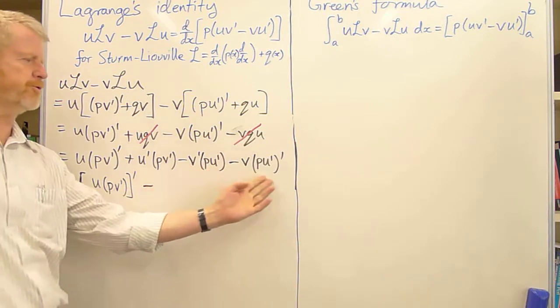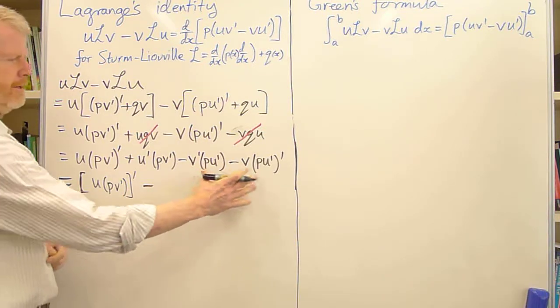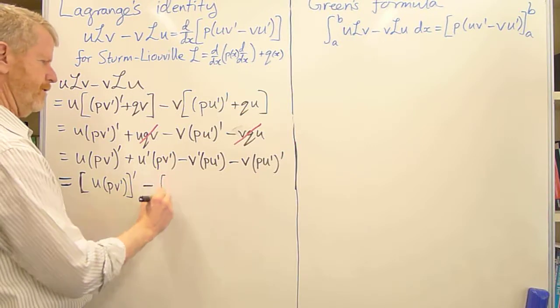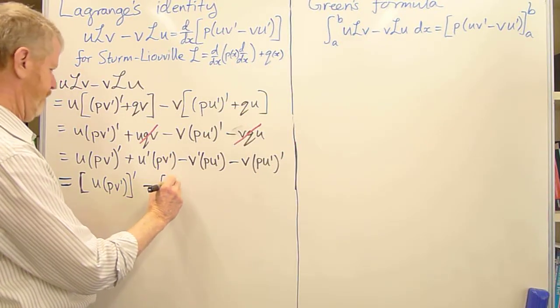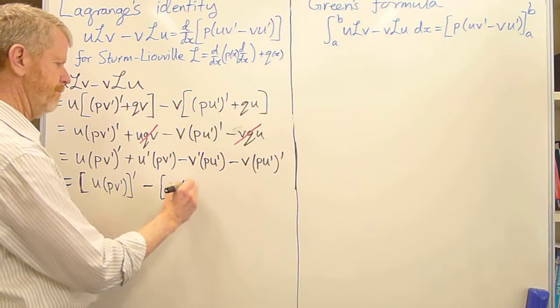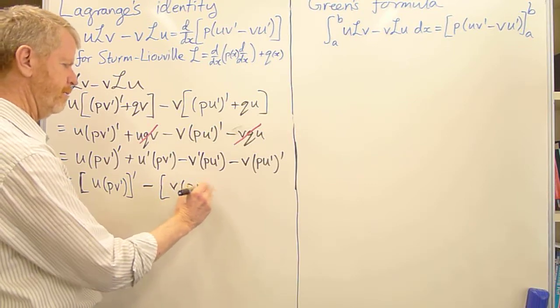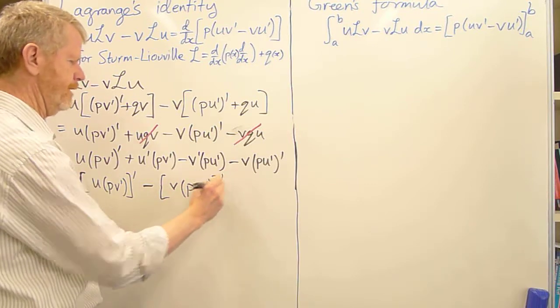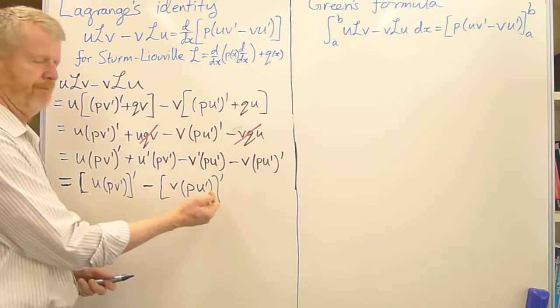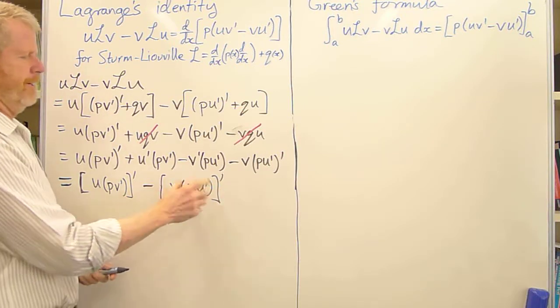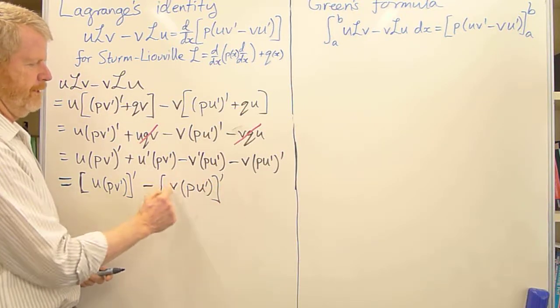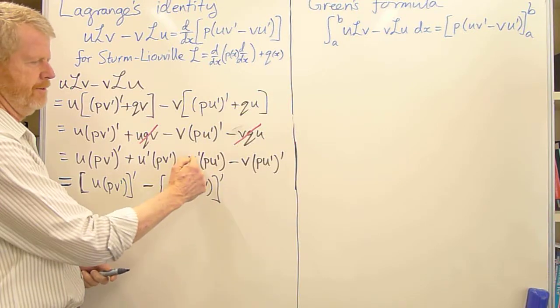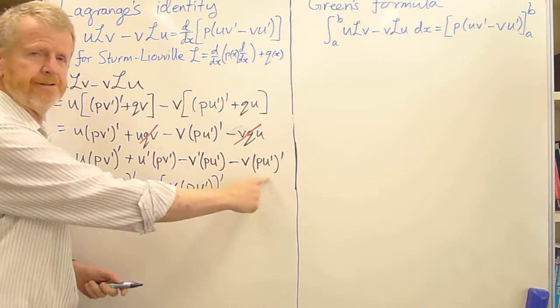And then there's the same trick for these two. These two terms are precisely what you get when you differentiate vpu'. Again, the product rule. Differentiate this product. It's v' times that, which is this term, and v times the derivative of that, which is this term.